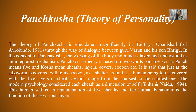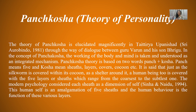Panchakosh theory is based on two words: Panch plus Kosh. Panch means five and Kosh means sheath — a cover, a layer, a cocoon. It is said that just as the silk worm is covered within its cocoon as a shelter around it, human beings too are covered with five layers or sheets.